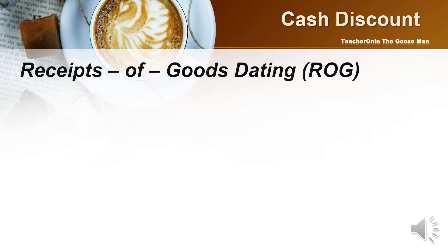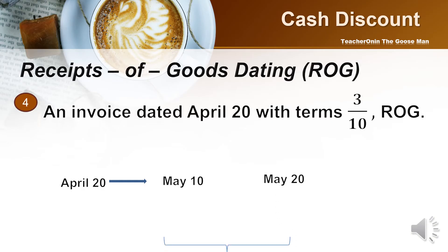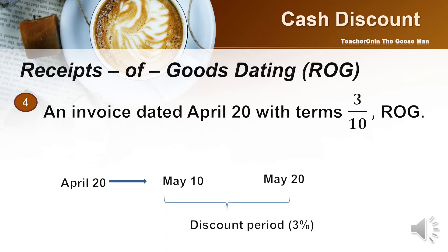Let's have an example for ROG. An invoice dated April 20 with terms 3/10 ROG. The invoice is dated April 20. Say you received the item on May 10. Then, within 10 days — until May 20 — this is the discount period and you can avail of a 3% discount. But if you settle your obligation beyond May 20, you can no longer avail of the 3% discount.